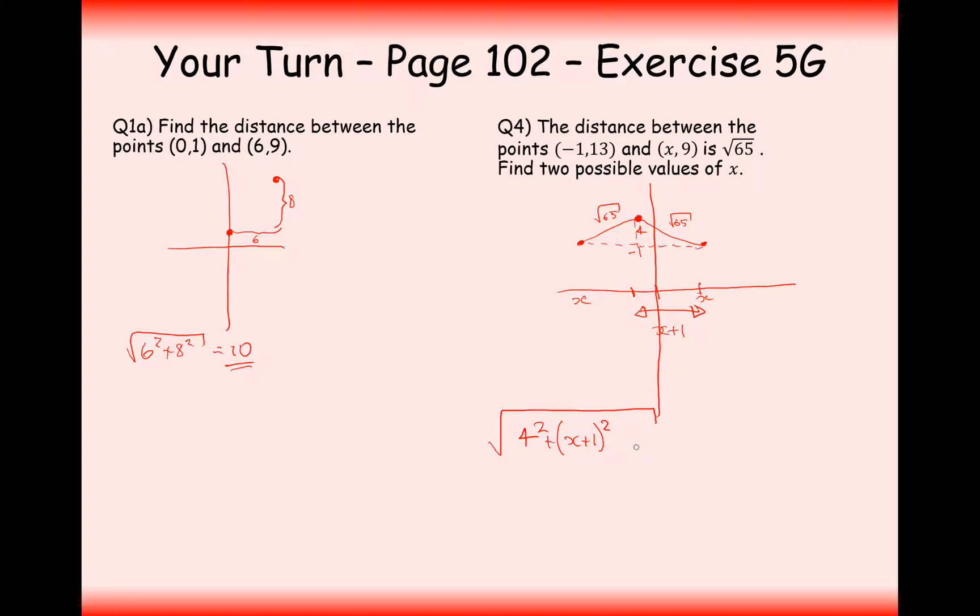And this distance here is going to equal the square root of 65. So, what I now need to do is square both sides, so I'm going to get 16 plus (x + 1) squared equals 65. Now, taking away 16 from both sides, I'm going to get (x + 1) squared equals 49.